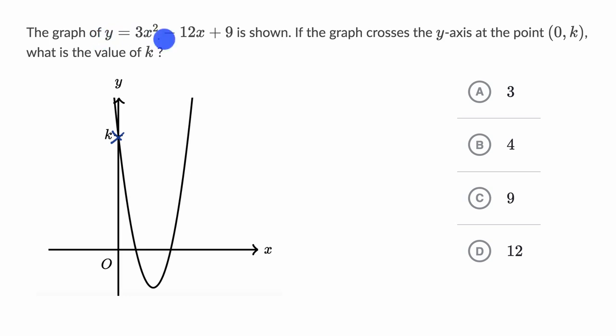To figure that out, we just have to look back to the equation. I'll just rewrite it: y is equal to—and we see that it's written in standard form—3x squared minus 12x plus 9. So what is y going to be equal to when x is equal to zero?